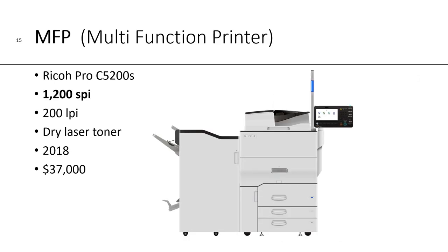A fourth example of a marking or writing engine that outputs in spots is our MFP multifunction printer. We have a Ricoh Pro C5200S. It outputs at 1,200 spots per inch and typically outputs at 200 lines per inch, which is a halftone dot. This is a dry laser toner technology, and we purchased the Ricoh new in 2018 for a price of about $37,000.